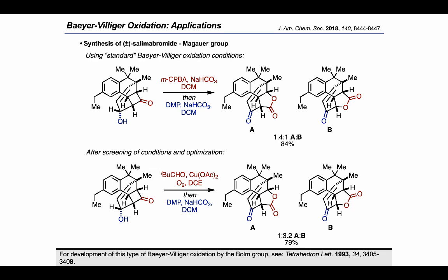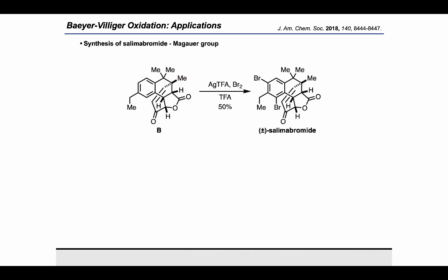A subsequent DMP oxidation brought the secondary allylic alcohol up to the ketone. Then, to close out the story, they were able to convert B into the final target, selimibromide, by treating with silver trifluoroacetate, bromine, and trifluoroacetic acid, which installed the two requisite bromines on the aromatic ring.